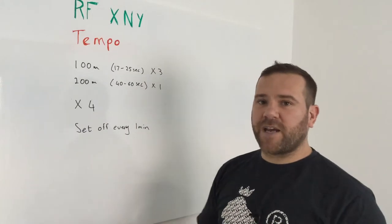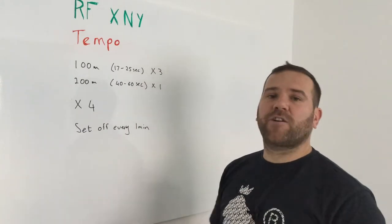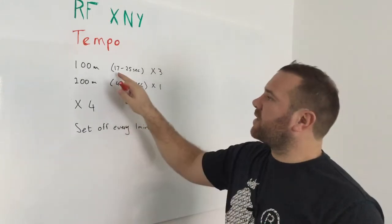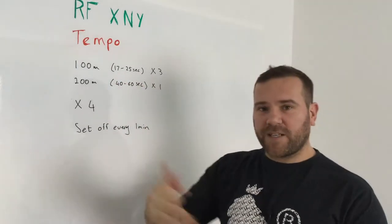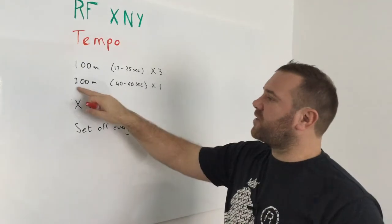You're going to rest the remainder of a minute and then do your second run. Every time that's your target, 17 to 25 seconds. You're going to do 300 metres of sprints, followed by a 200 metre sprint.